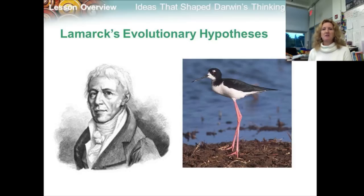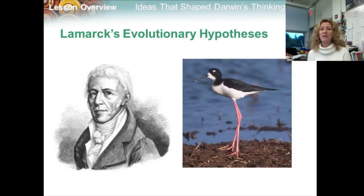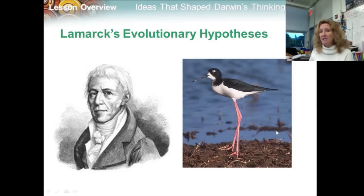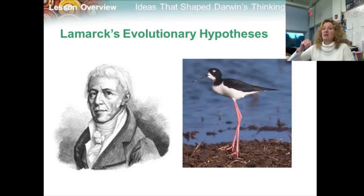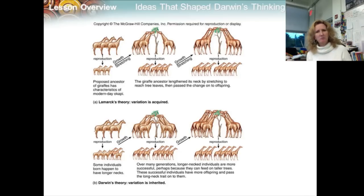Lamarck proposed that all organisms have an inborn urge to become more complex and perfect, and to change and acquire features that help them live more successfully in their environments. Lamarck thought that organisms could change the color, size, or shape of their organs by using their bodies in new ways. For example, this black-necked stilt could have acquired long legs because it began to wade in deeper water looking for food, and as the bird tried to stay above the water surface, its legs would actually grow a little longer. Structures of individual organisms could also change if they were not used — if a bird stopped using its wings to fly, its wings would become smaller.